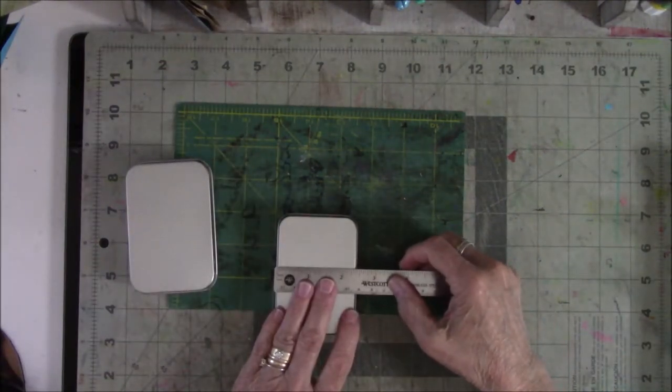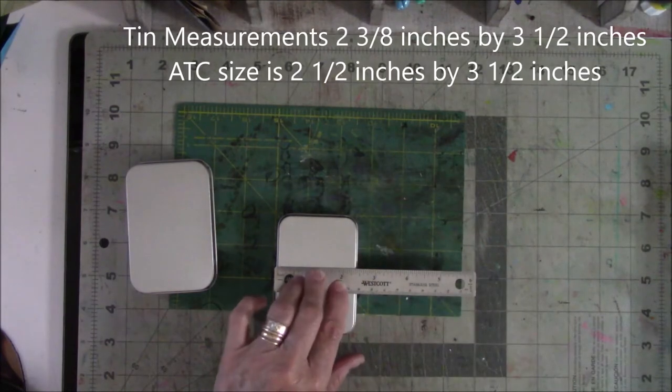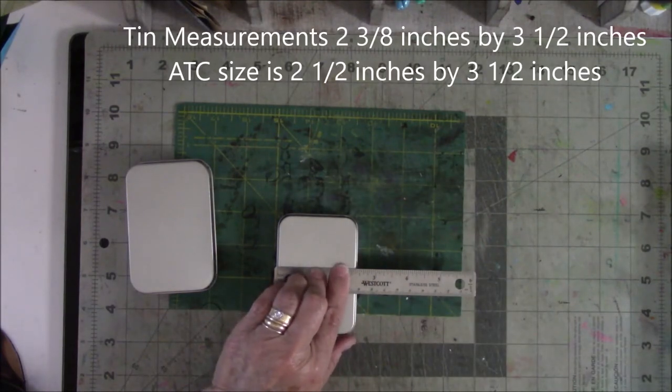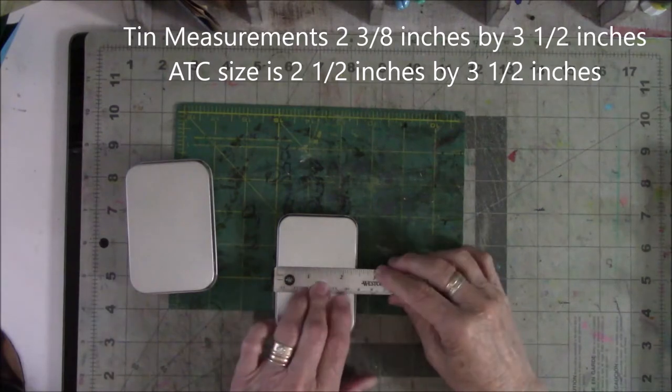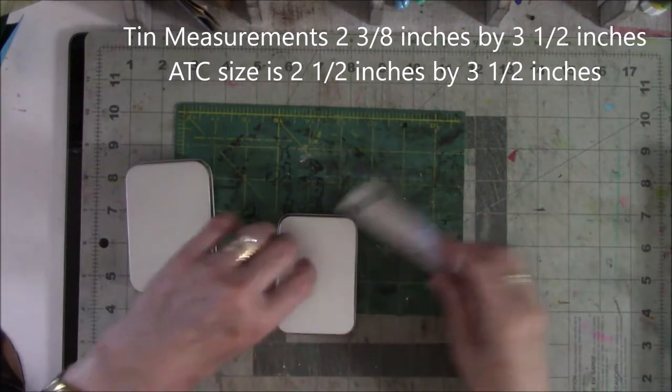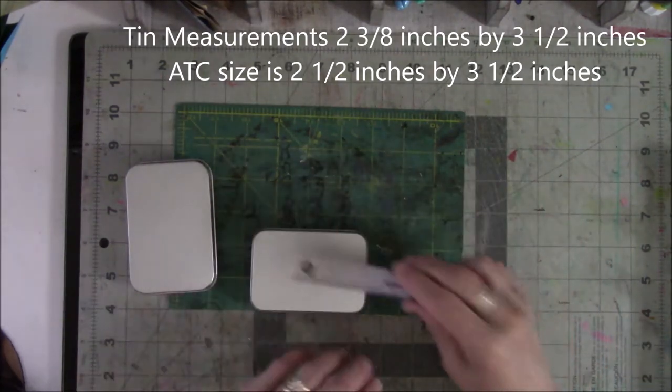What I'm doing today is making something with a tin that I'm going to use to store my ATCs. I decided this year not to make a book. Well, that's not true. You'll see later at the end what the deal is. Anyway, I measured them to be sure that my cards would fit in them. The little one, not going to work. Look at the measurements at the top.